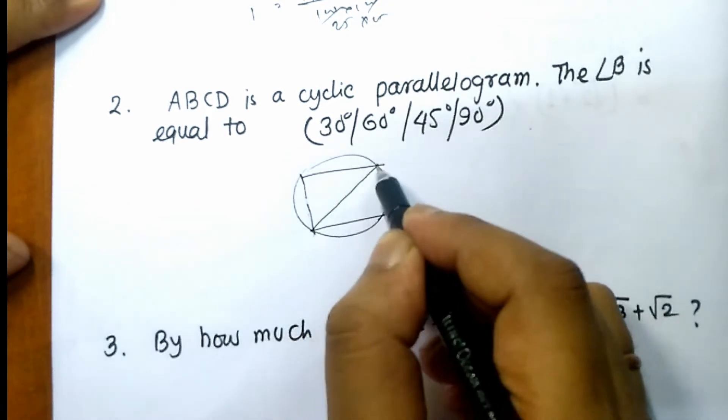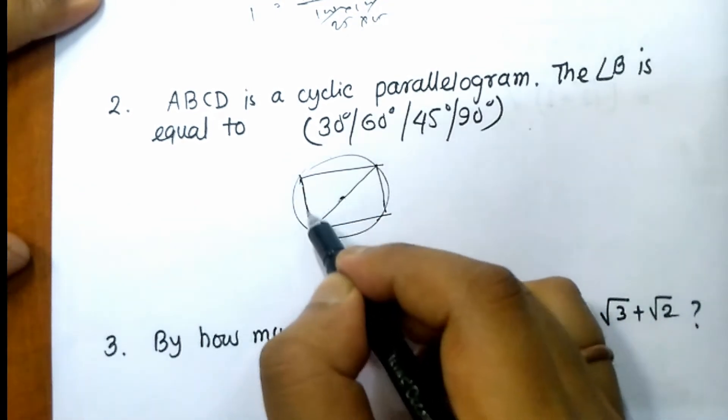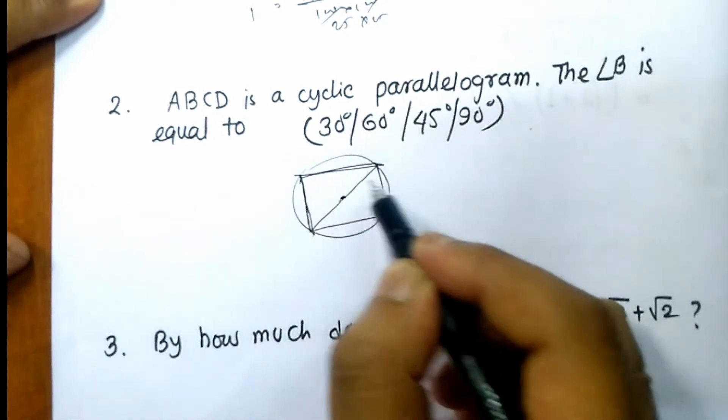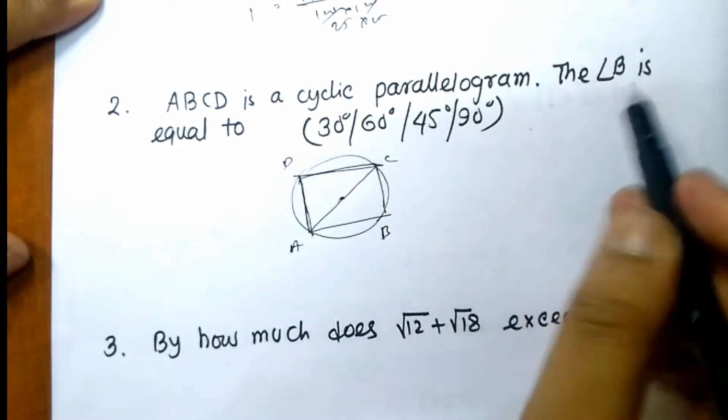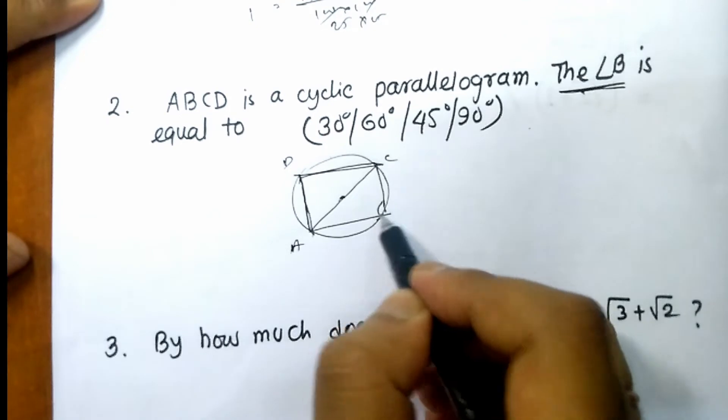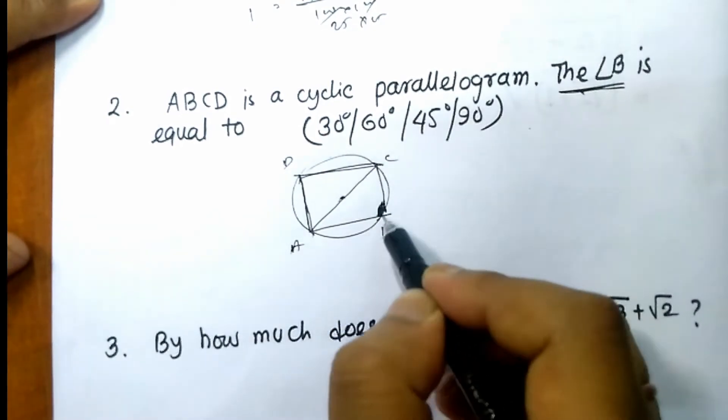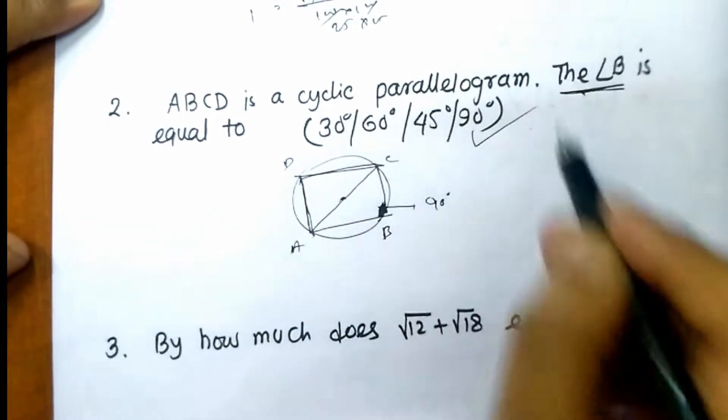If we see that this is the semi-circle. A, B, C, D. We have to find that B. B is half circle, B is almost 90 degree. Answer.